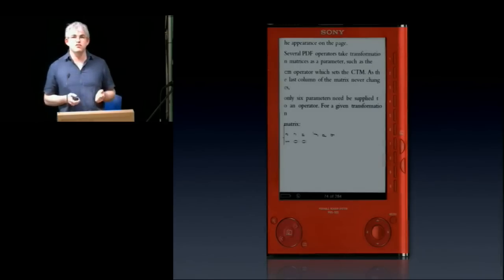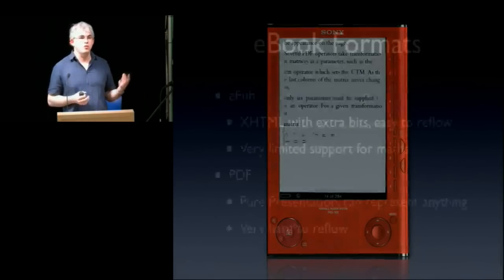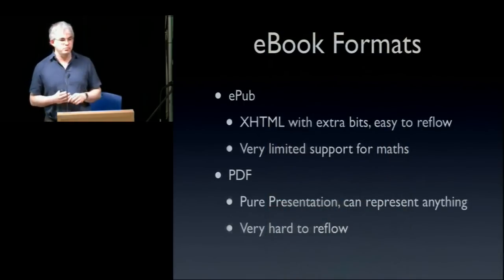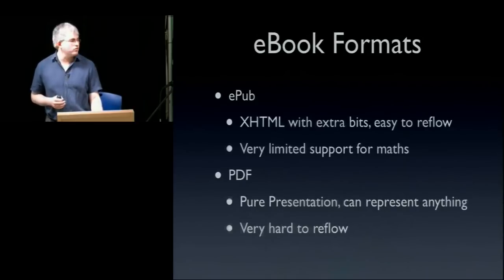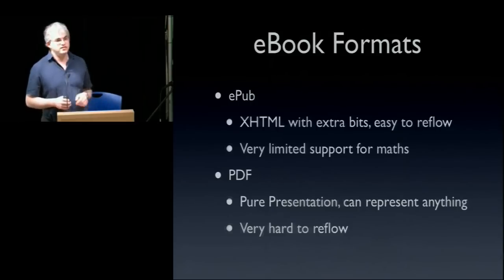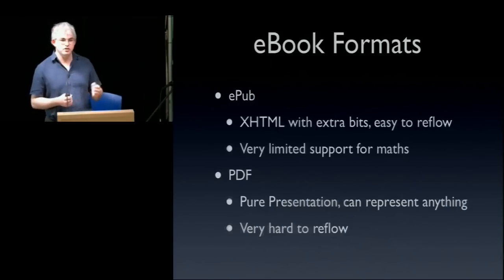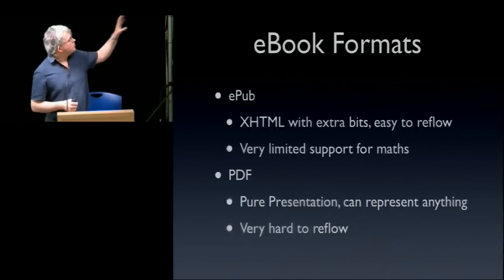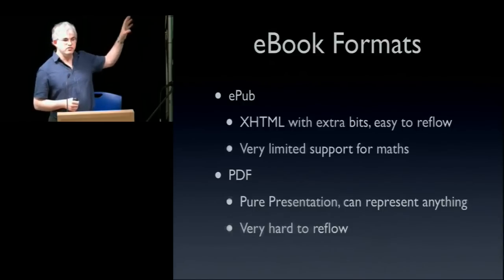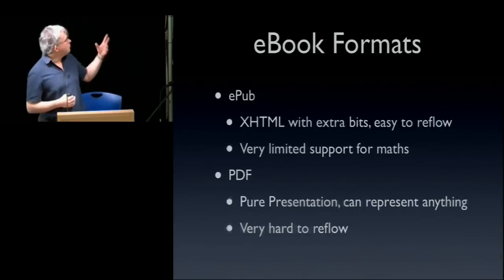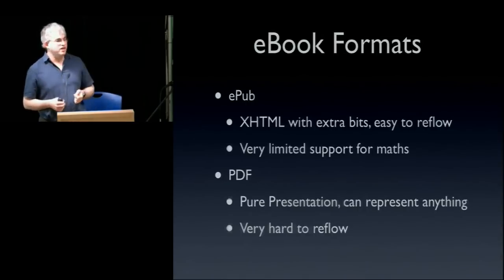What we're seeing here is the difference between the two common formats used on e-books. On one hand, we have EPUB — used for the Alice in Wonderland novel — which is basically XHTML with a few extra bits defining appearance, all zipped up together. It worked okay for novels, but HTML has limited support for typesetting mathematics, so it isn't good for technical documents.